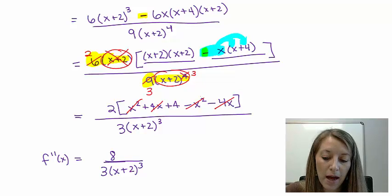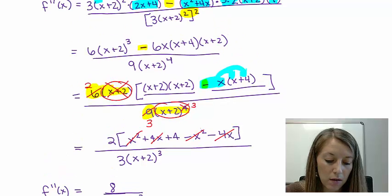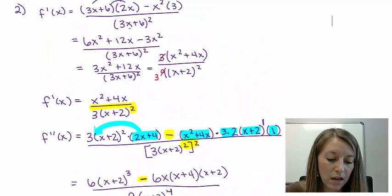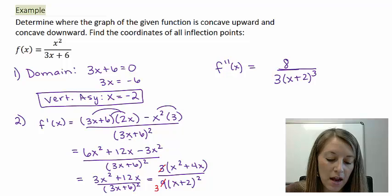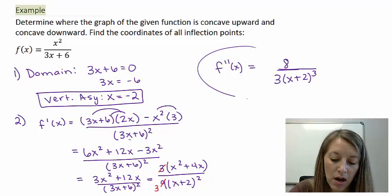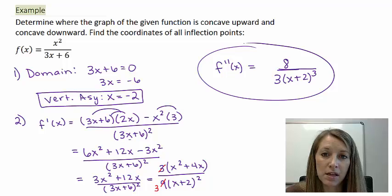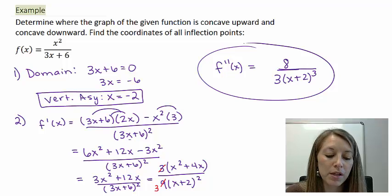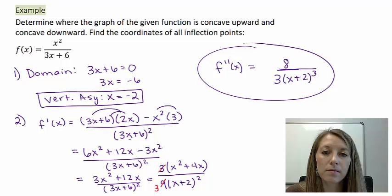Let me scroll back through all of this work — finding the first derivative, then the second derivative — and the answer is pasted up here. My second derivative is 8 / [3(x+2)³]. Because of time, I'm going to end this video here, but in the next video I'll come back to finish finding the concavity and inflection points of this problem.